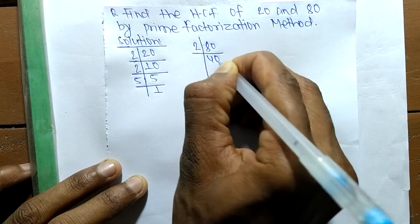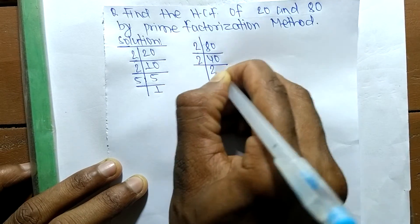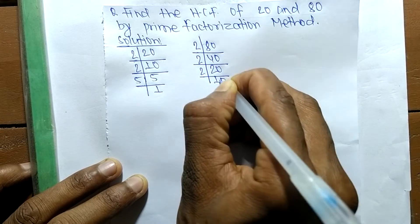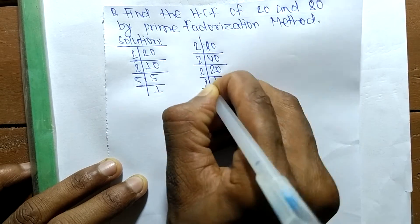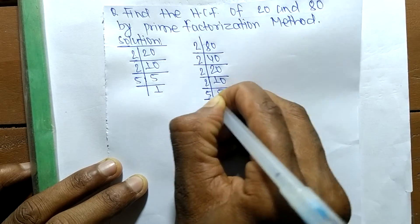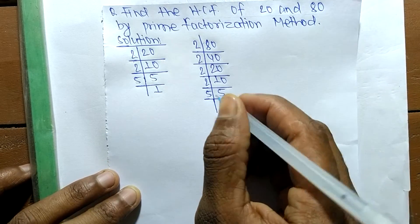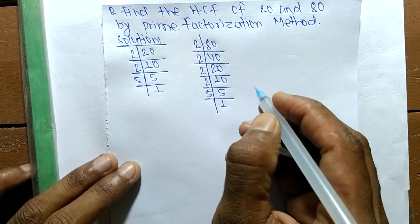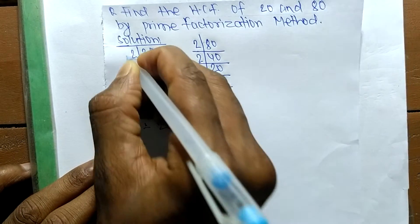Now the prime factors of 80 are: 2 times 40 makes 80, 2 times 20 makes 40, 2 times 10 makes 20, 2 times 5 makes 10, and 5 times 1 makes 5.